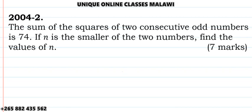Let's see the solution of this problem. It was question number two from 2004. The question is: the sum of the squares of two consecutive odd numbers is 74. If n is the smaller of the two numbers, find the value of n. This was worth seven marks.